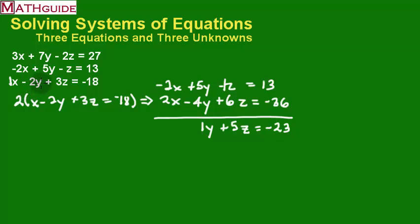I'm going to have to cancel the X one more time. So instead of using the bottom two equations, I'm going to now use the bottom one and the top one. This time to get these X's to cancel, I'm going to make this a negative three by multiplying this whole equation by negative three. So I'm going to multiply negative three times X minus 2Y plus 3Z equals negative 18. So let's do that.